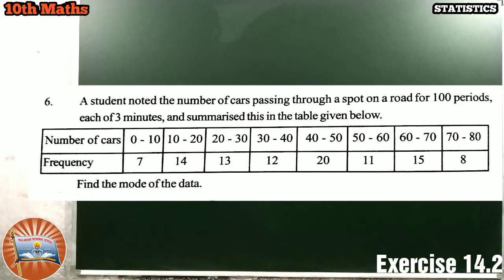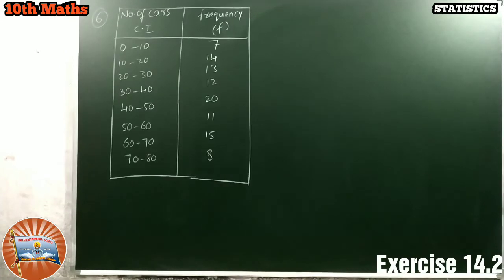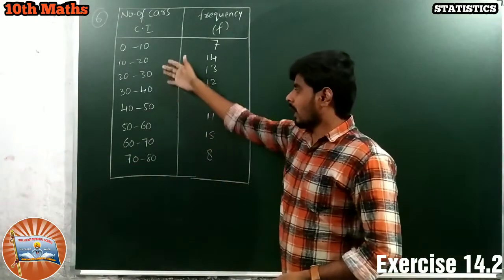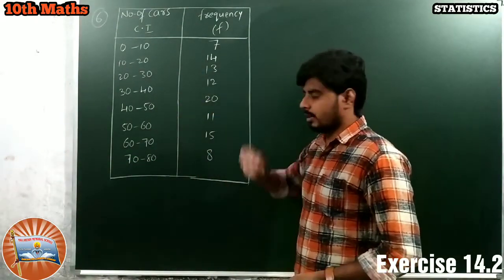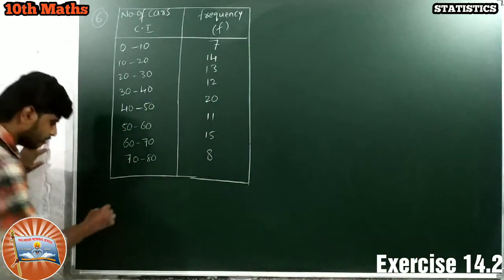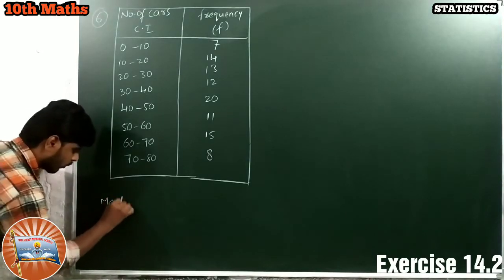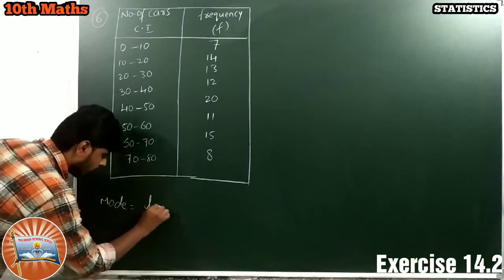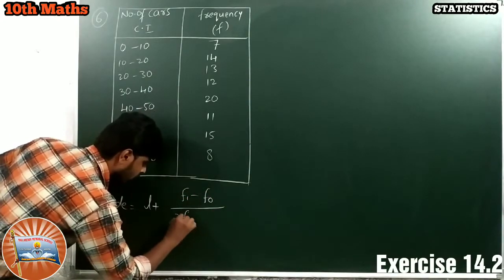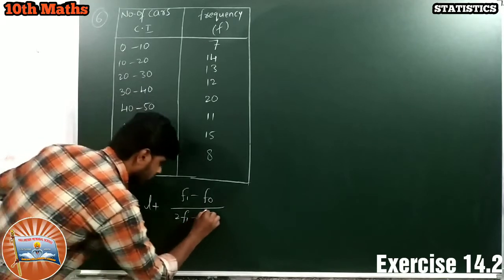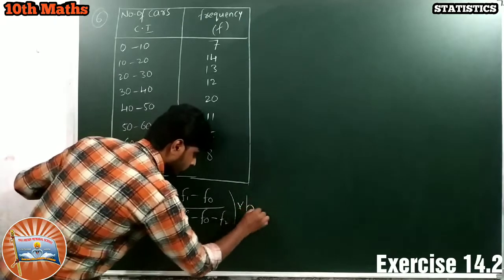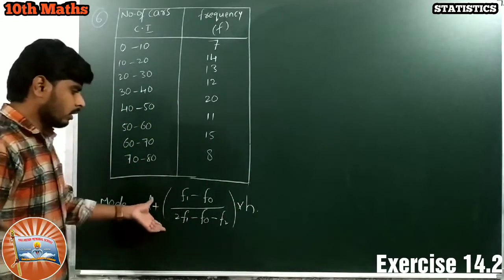This is the given data, class intervals and frequency. We have to find the mode. What is the mode formula? Mode equals L plus F1 minus F0 by 2F1 minus F0 minus F2 into H. This is the formula.